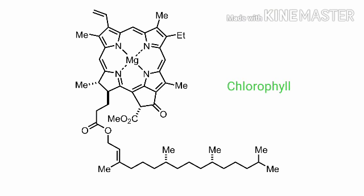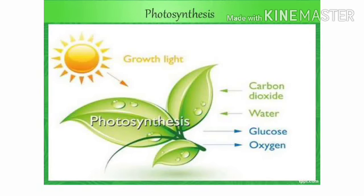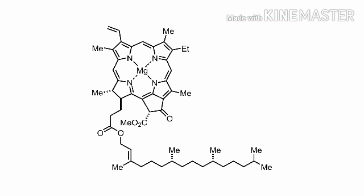Plants possess something called chlorophyll, which has the property of absorbing all wavelengths but the green color. Thus plants appear to be green, but chlorophyll's function is not limited to giving color. It is responsible for one of the most important biochemical reactions called photosynthesis — a process in which atmospheric CO2 and water from the soil gets assimilated by the plant to make carbohydrate, which is the food for all living organisms.